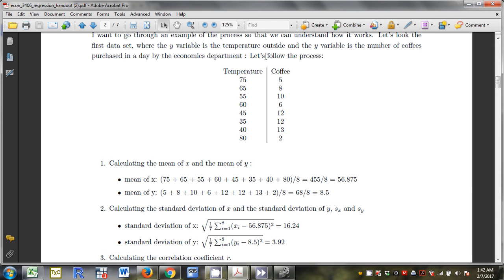Calculating the means. Find the means by adding up these values. 75 plus 65 plus 55, 60, 45, 35, 40, and 80. I get 455. There are eight total values. 56.875. Coffee, add them all up, divide by eight, eight and a half. I know that 56.875 and eight and a half will be a point on my line.